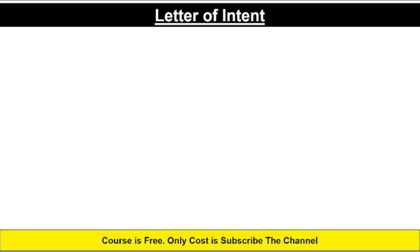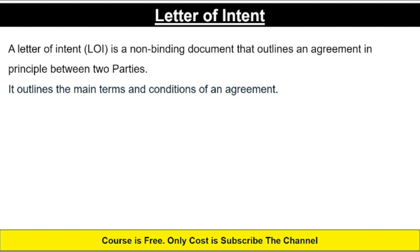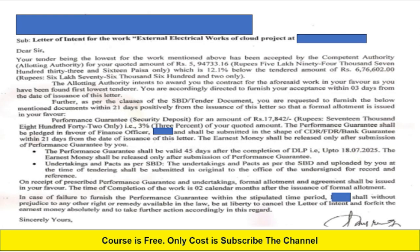Now we will see what the letter of intent means and what it contains. A letter of intent is a non-binding document that outlines an agreement in principle between two parties. It contains the main terms and conditions of an agreement. I will show you one LOI which I recently issued to a contractor — you can see that the LOI contains the main terms and conditions of the contract.